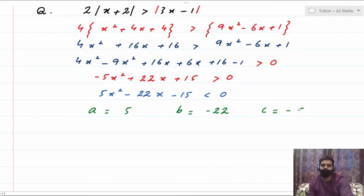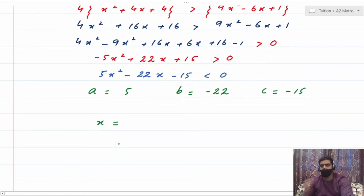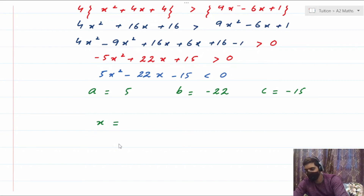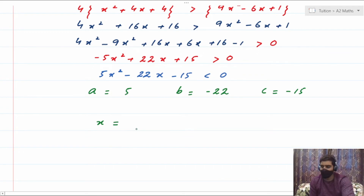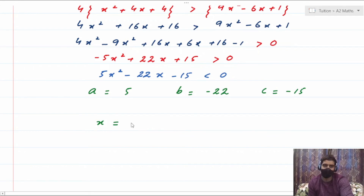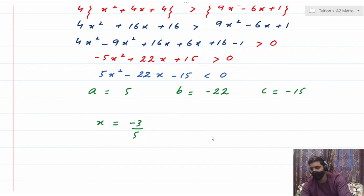After simplification and multiplying both sides by −1 (reversing the inequality sign), you get the quadratic. With a = 5, b = −22, c = −15, hit the calculator. The two values of x are x = −3/5 and x = 5.